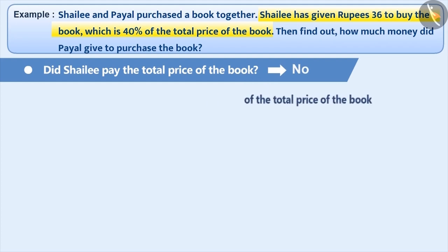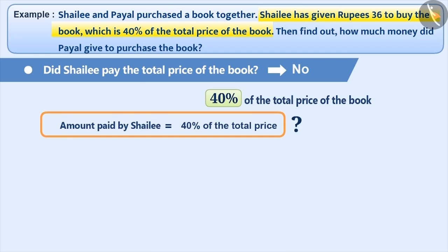Out of the total price, how much part did she pay? 40%. Can we say, the amount paid by Shailee is equal to 40% of the total amount? Yes.